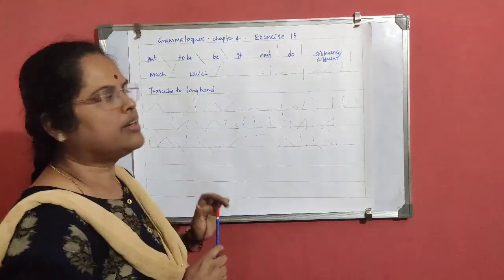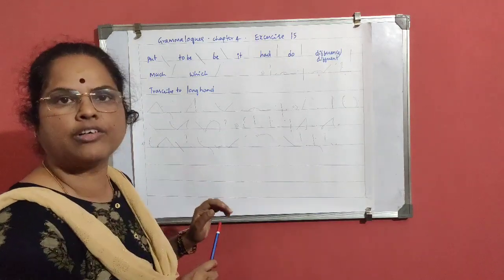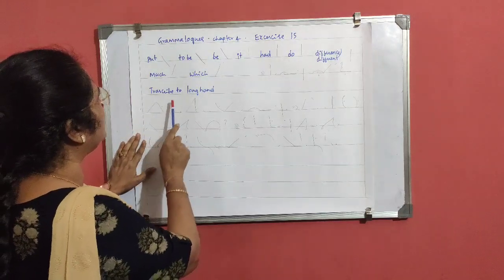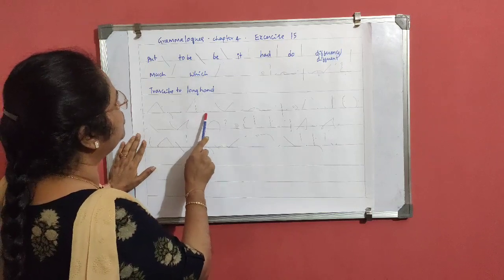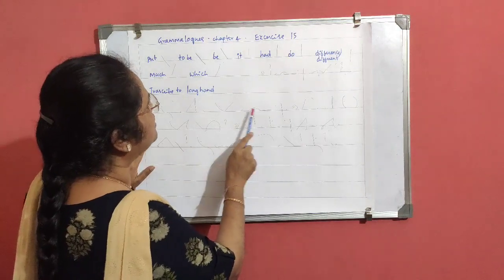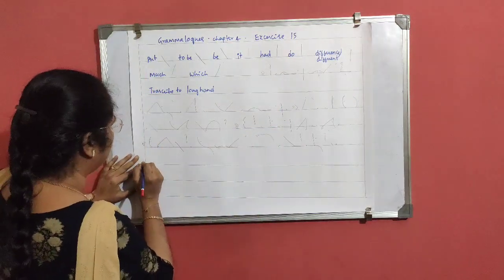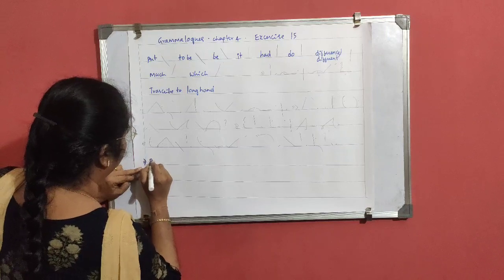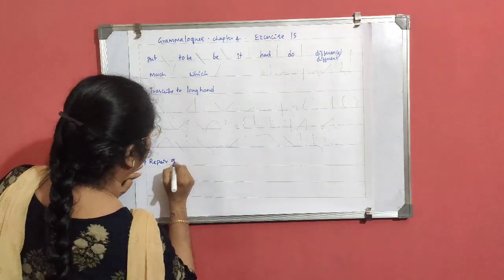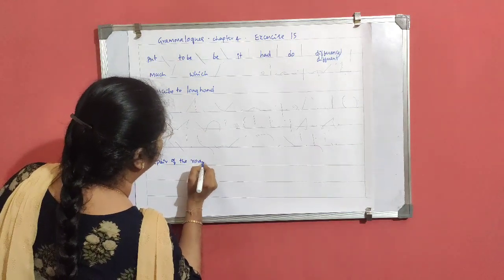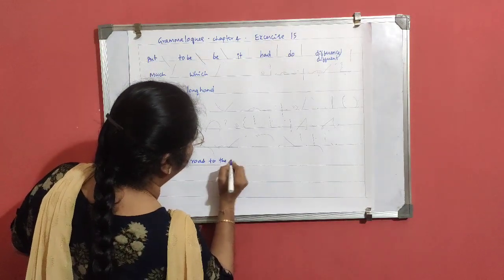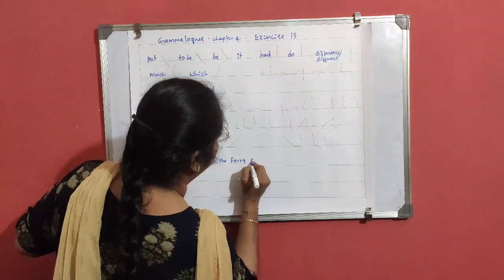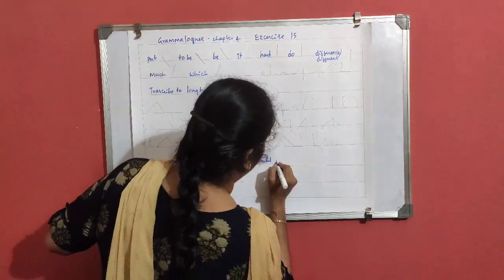We will move on to Exercise Number 15. These sentences we have to transcribe into longhand. The first sentence is: Repair - R, T downward, R after P, A oval - repair of the road to the ferry should make a difference. The first one I will transcribe into longhand. Repair of the road to the ferry should make a difference.